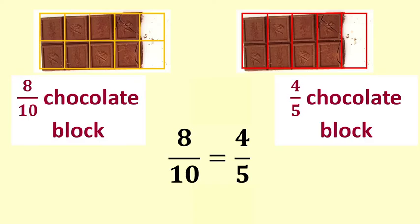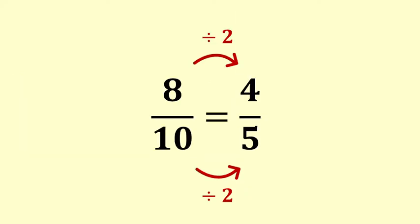We reduce the number of pieces in a whole block from ten to five by dividing by two. And we reduce the number of pieces in our part block from eight to four by dividing by two. We need to divide the numerator and the denominator by the same amount in order to express it as an equivalent fraction in simpler form.